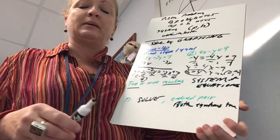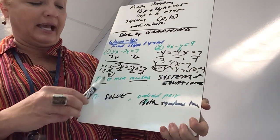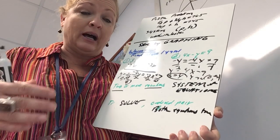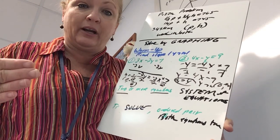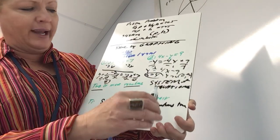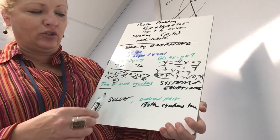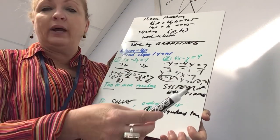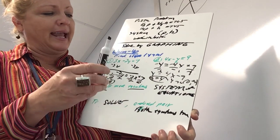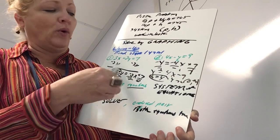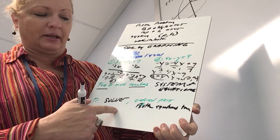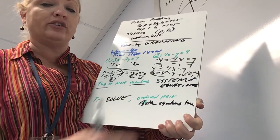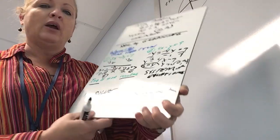Now that we've reviewed that, let's talk about solving a system by graphing. A system means you have two or more equations. Solving a system means finding the ordered pair — the point — that works in both equations, makes both equations true, and is a point on both lines.